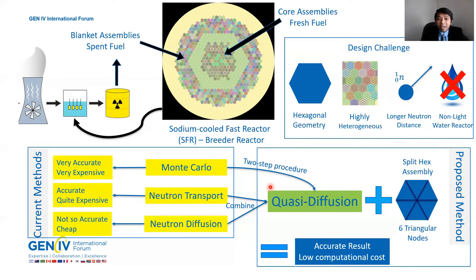The problem is this reactor has some challenges to design because it is an advanced reactor. It also uses hexagonal geometry, which is different from the standard light water reactor that uses square geometry. The hexagonal geometry is much more complicated to design, and there is also a highly heterogeneous problem for this reactor.